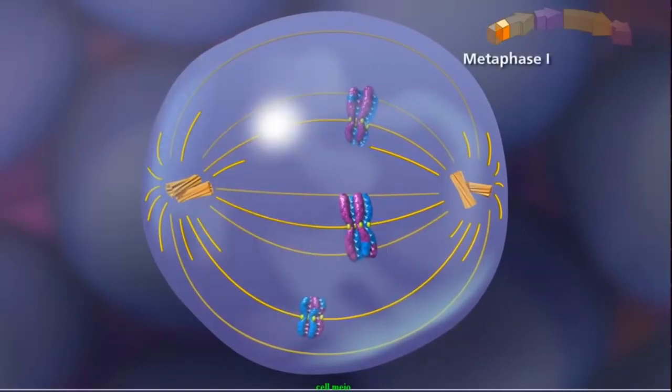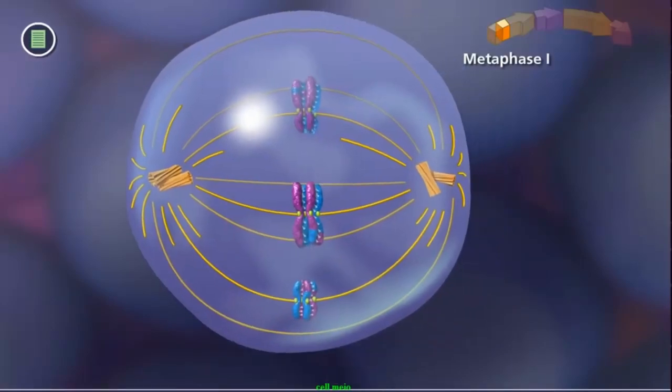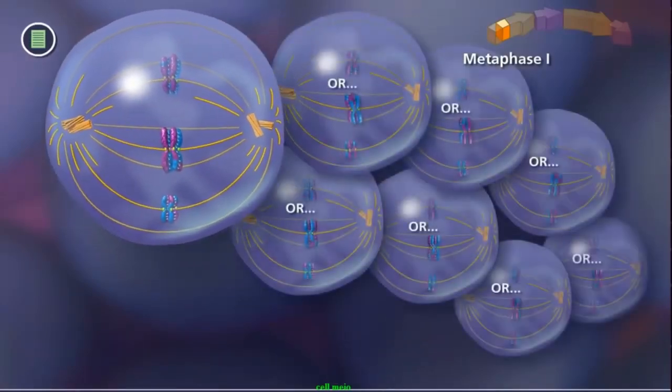During metaphase I, bivalents randomly align along the metaphase plate. Due to independent assortment, this alignment is random and adds to genetic diversity.